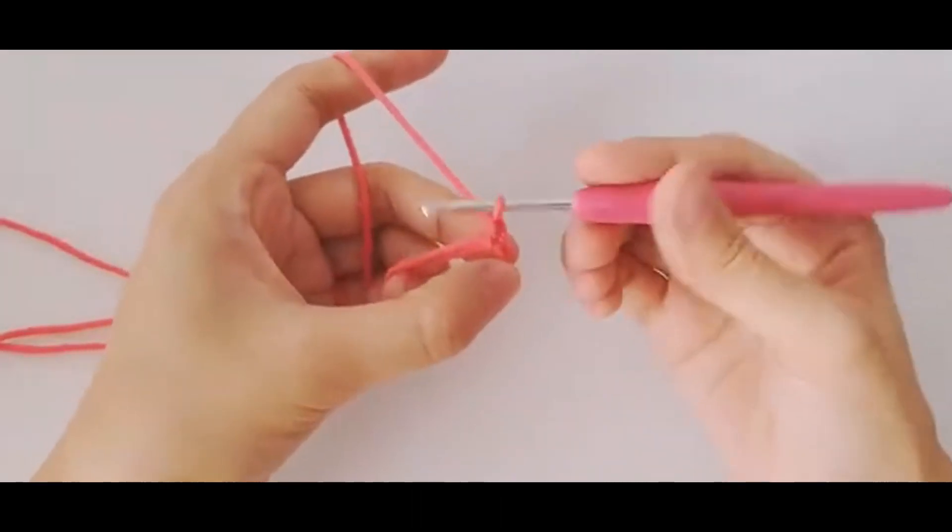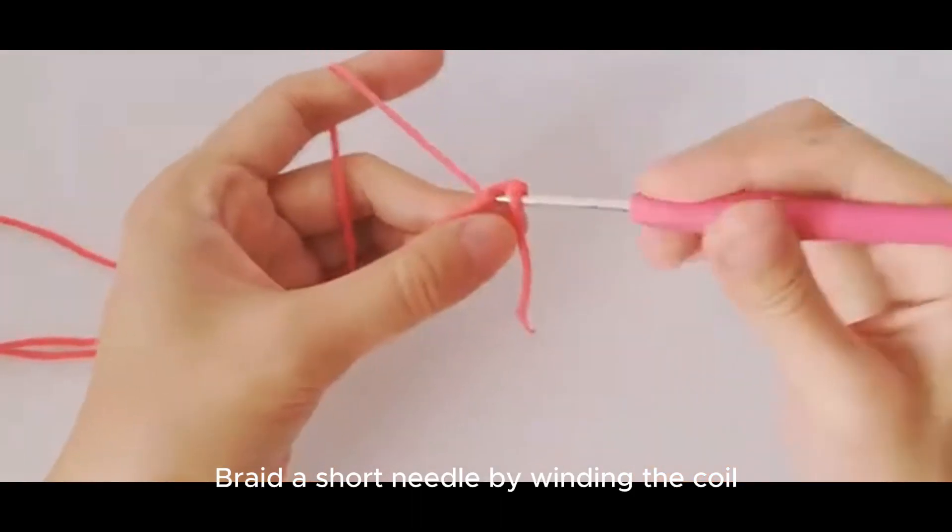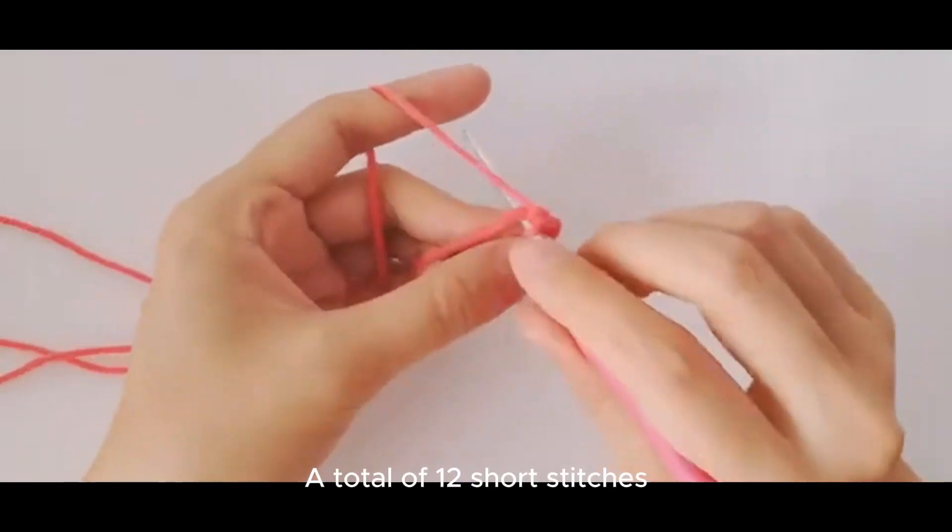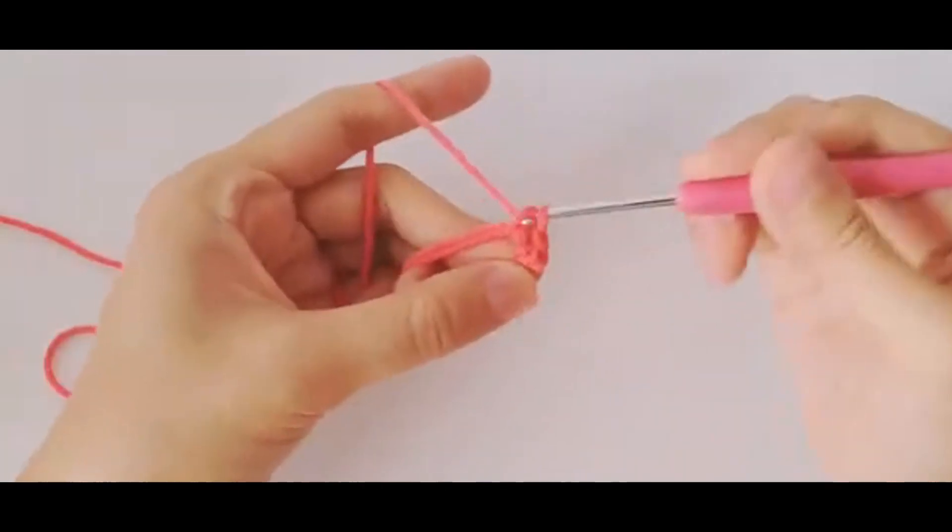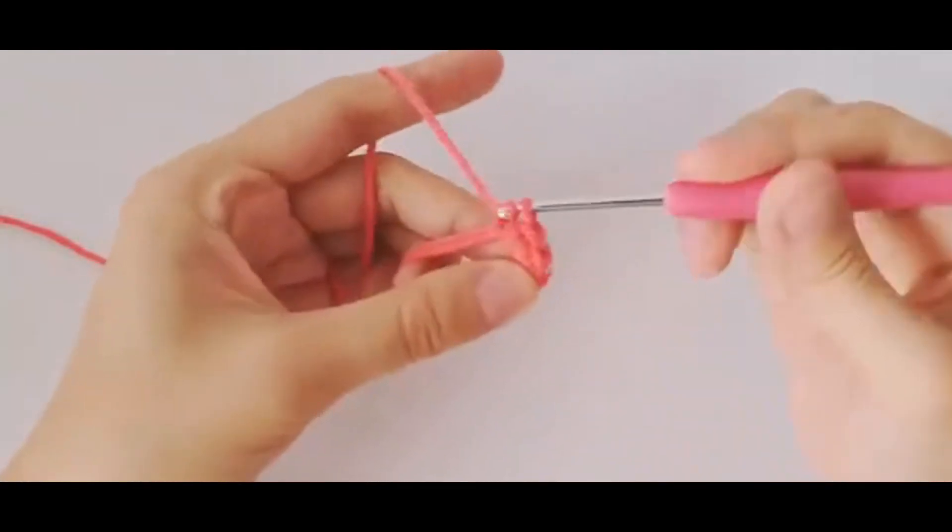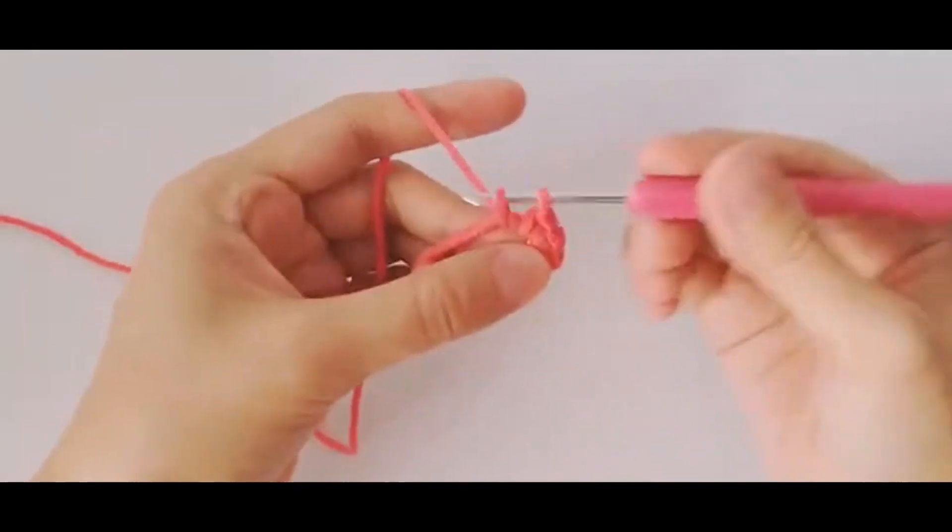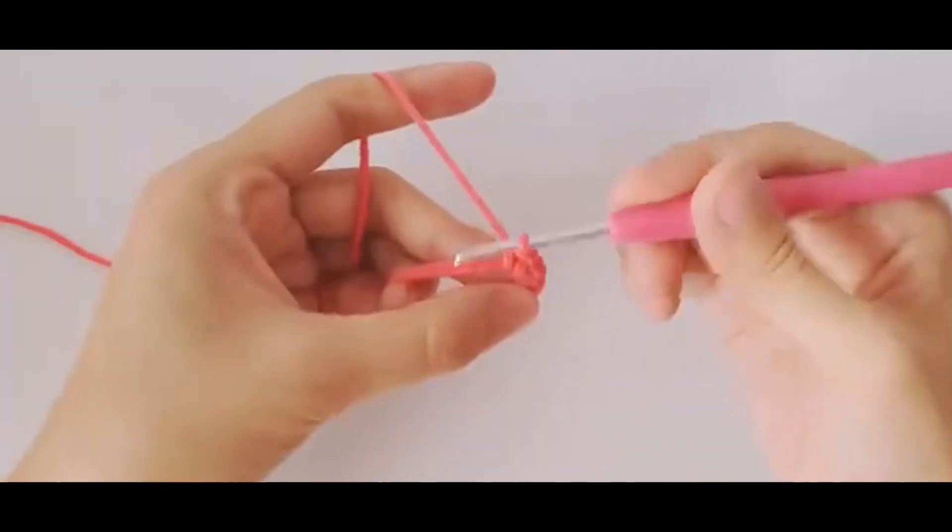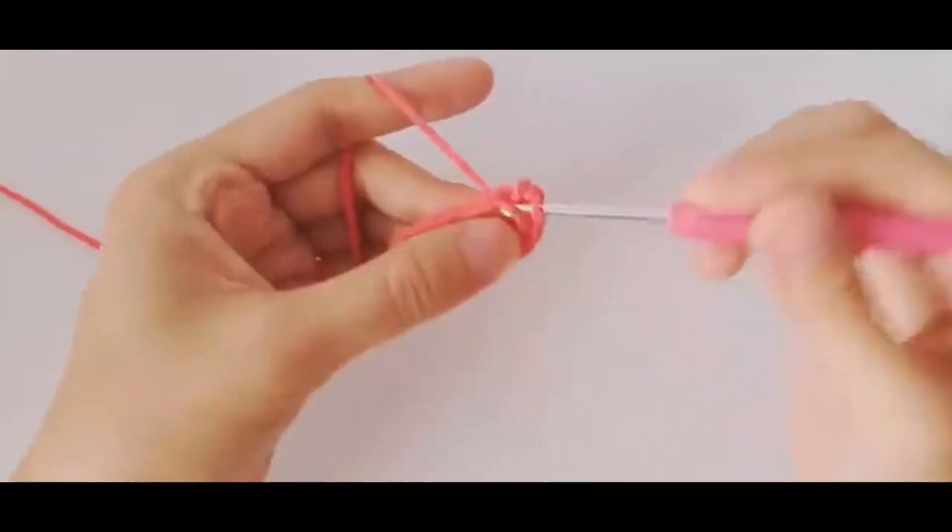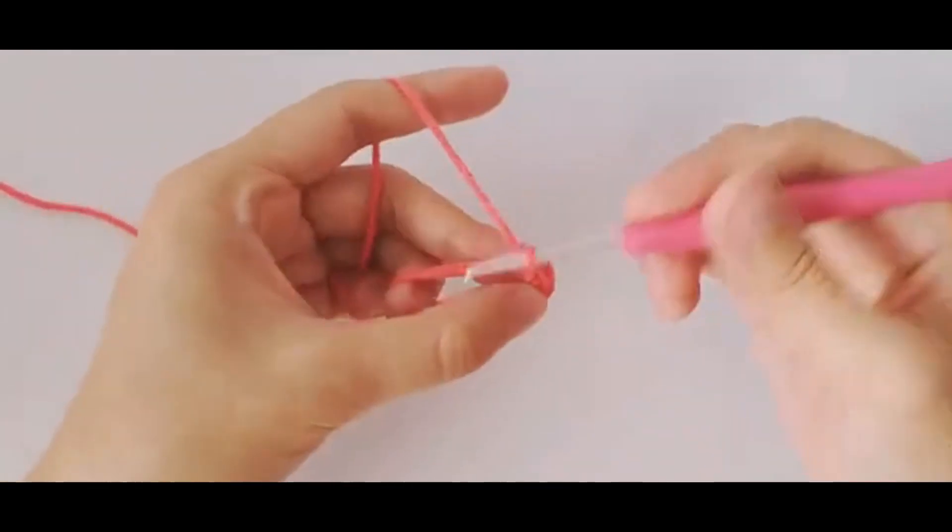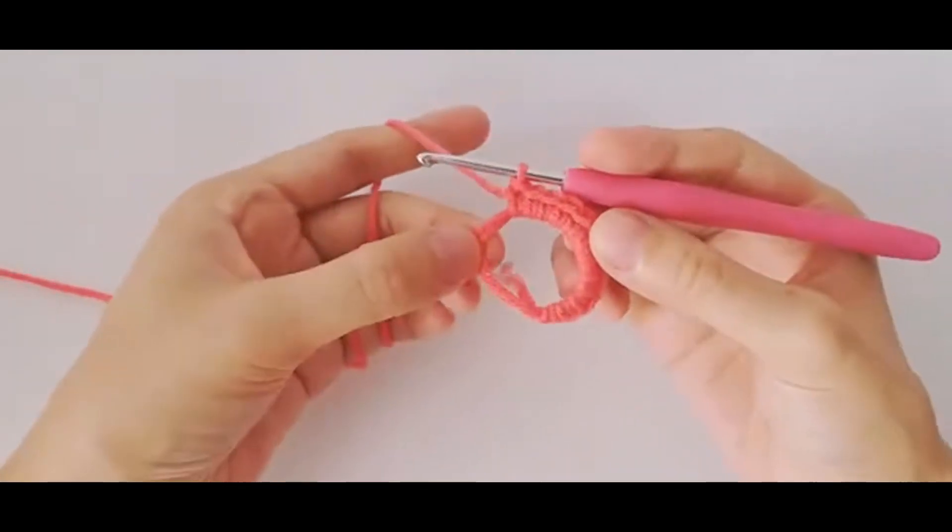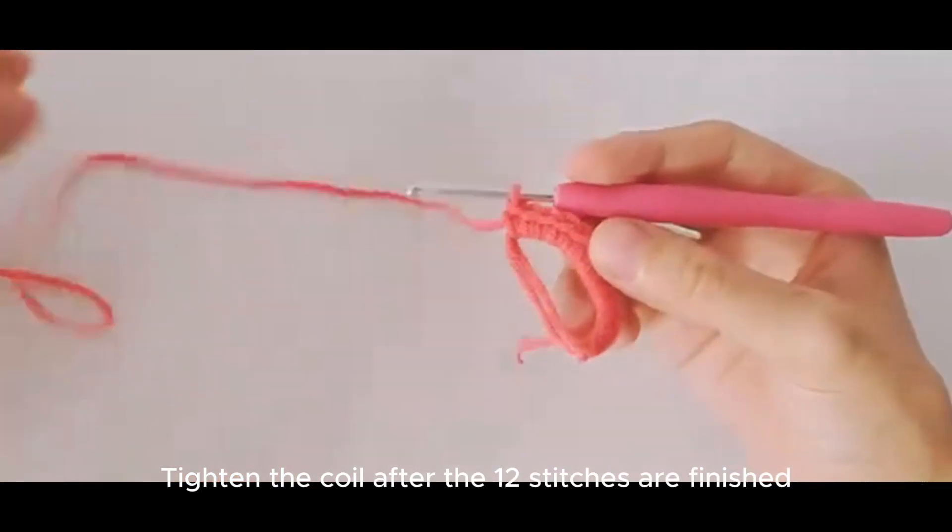Rise a pin, braid a short needle by winding the coil. A total of 12 short stitches. Tighten the coil after the 12 stitches are finished.